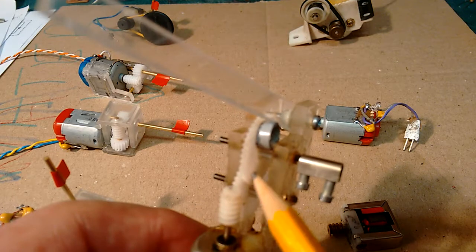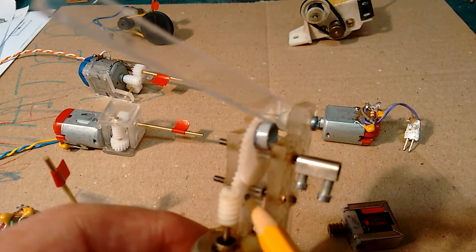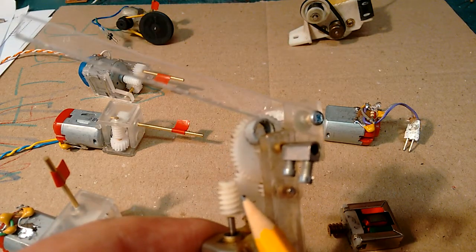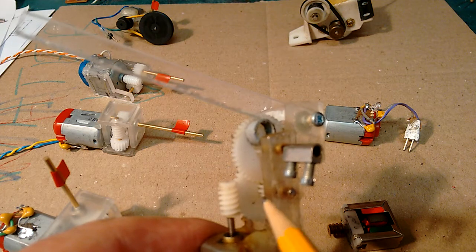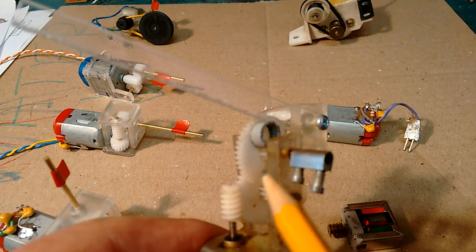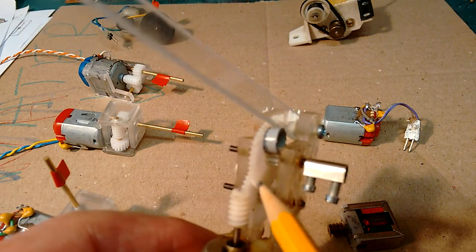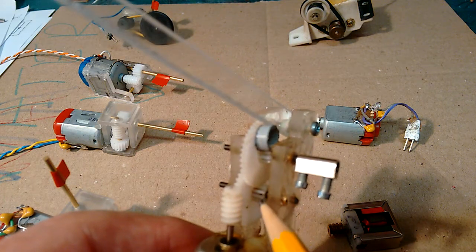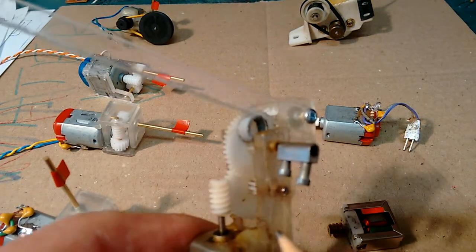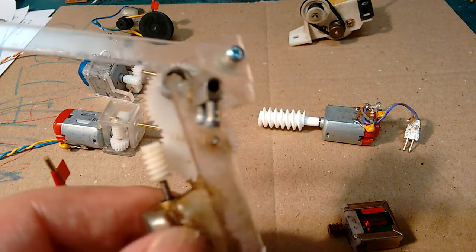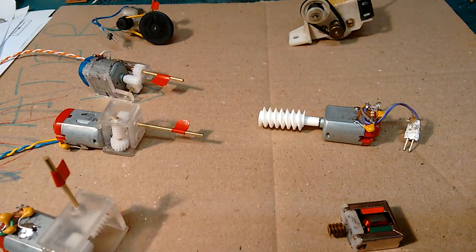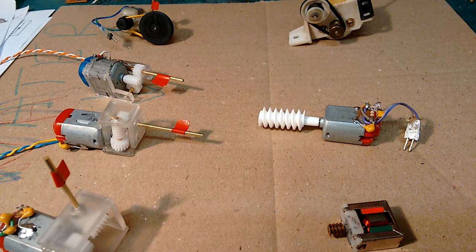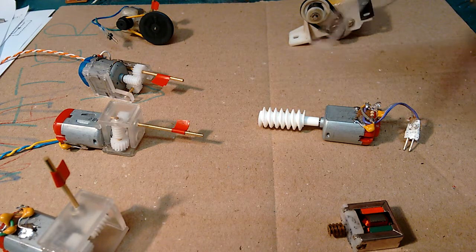I've used two gears here to reduce the speed down. The worm reduces it quite a lot, but then this just gives it that little extra, what will it be, four to one, something like that, to get it going slower. Don't know why I gave up with that. Well I gave up because it's too big, it's clunky, it's not what I'm looking for.